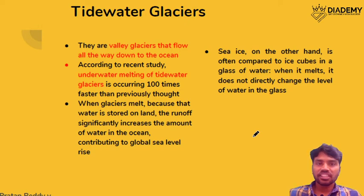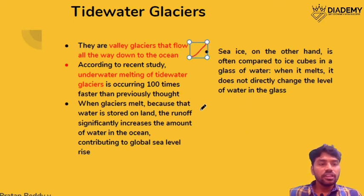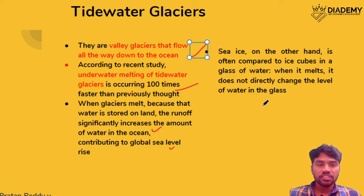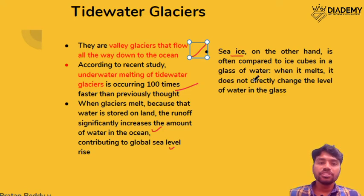Tidal water glaciers are valley glaciers that flow all the way into the ocean. A recent study found that the underwater melting of these tidal water glaciers is occurring 100 times faster than previously thought. When glaciers on land melt, the stored water flows into the ocean, significantly contributing to sea level rise. In contrast, ice floating in water — like ice cubes in a glass — does not raise the sea level when it melts.